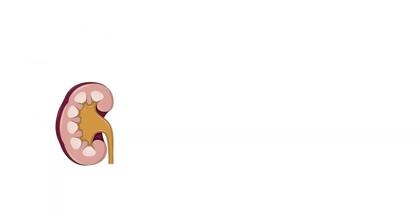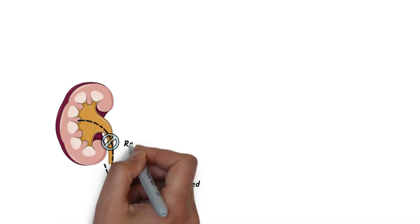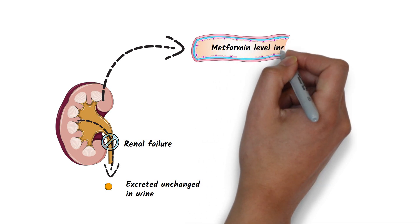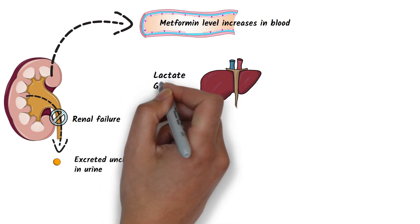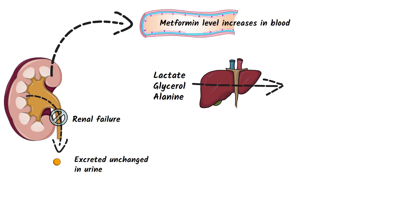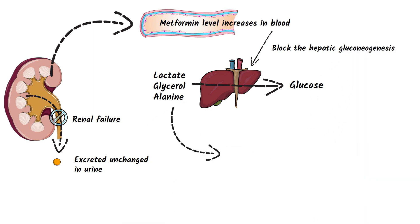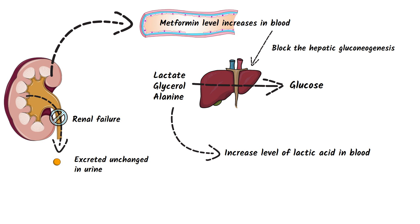The side effect we need to worry about is lactic acidosis. It more commonly occurs in renal failure patients, as metformin is excreted unchanged in urine. In renal failure, the excretion of metformin is decreased and its level increases in blood. Since the primary action of metformin is to block hepatic gluconeogenesis — where the main substrates, lactate, glycerol, and alanine, are converted to glucose — increased metformin levels impair hepatic utilization of lactic acid, increasing lactic acid levels in blood and eventually leading to lactic acidosis.